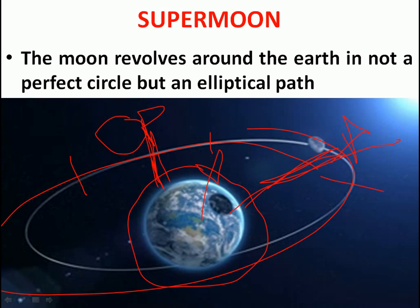But when the full moon occurs at perigee, which is the closest distance from the Earth, that full moon is called a supermoon. At perigee, irrespective of the phase, the moon already appears brighter and bigger, and when it is a full moon at perigee, it becomes even brighter and bigger than a typical full moon.